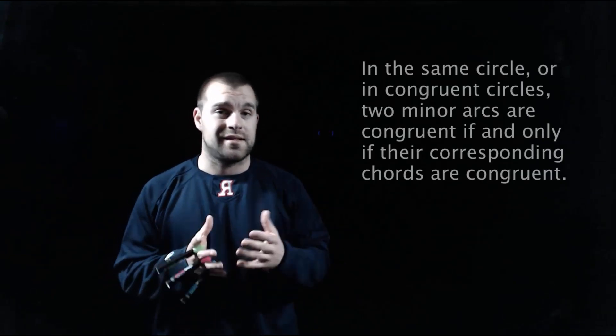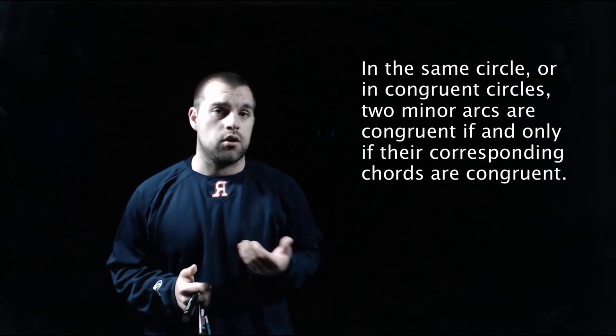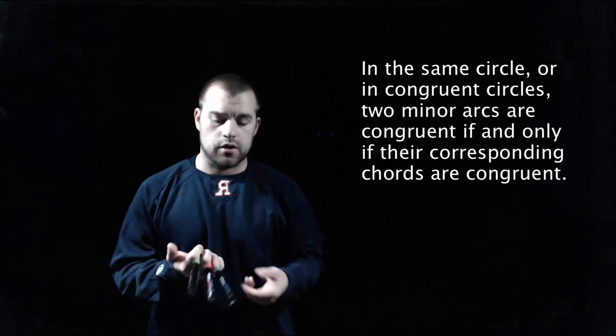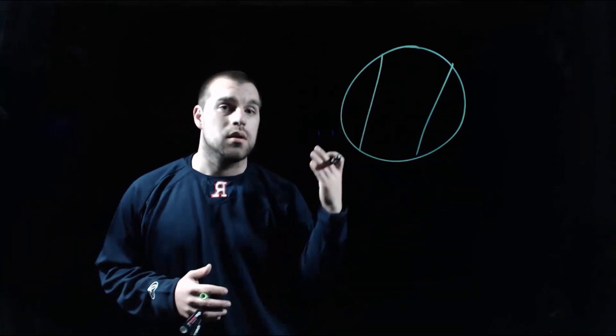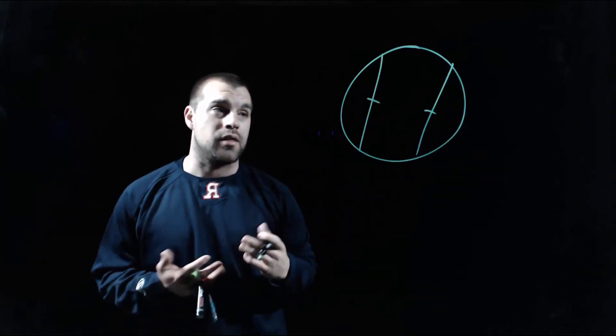The first property I want to deal with regarding chords and arcs is about creating congruent arcs within a circle — this also works for congruent circles. Our property says: in the same circle, or in congruent circles, two minor arcs can only be congruent if the chords that create those minor arcs are also congruent. If we draw two chords within a circle, for the two minor arcs on the outside to be congruent, then these two chords have to be congruent.